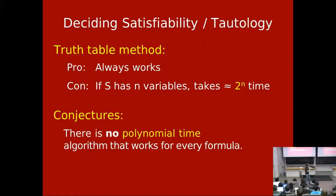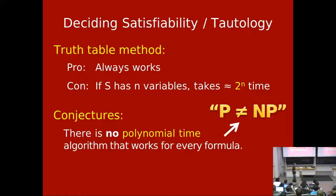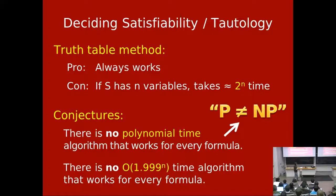There's a very famous conjecture related to this: any algorithm that decides if a formula is satisfiable cannot work in polynomial time — it cannot run in n-squared, n-cubed, n-to-the-fourth steps. It's well believed that's impossible. That's the famous P ≠ NP problem, which you may or may not have heard of — we'll talk about it much later in the course. In fact, most people conjecture you can't even have an algorithm running in time 1.999^n that always decides satisfiability. In the worst case it might take the full 2^n time.